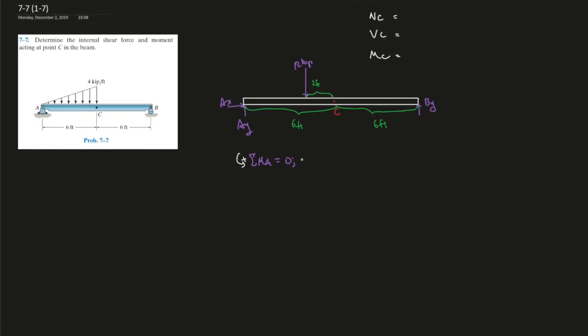This direction counterclockwise is positive, therefore 12 kip times 4 feet, 6 minus 2 is 4 feet. The distribution for a triangle is one-third of the distance from its height.